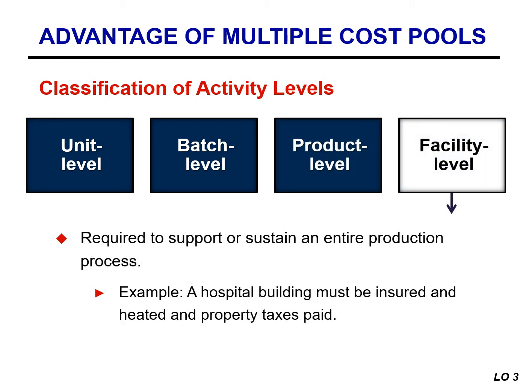Facility level activities are required to support or sustain an entire production process. For example, a hospital building must be insured and heated, and property taxes must be paid, no matter how many patients the hospital treats. These costs do not vary as a function of the number of units, batches, or products.